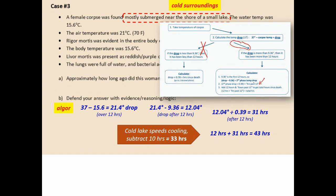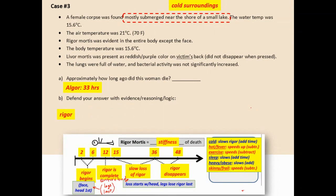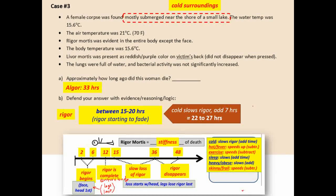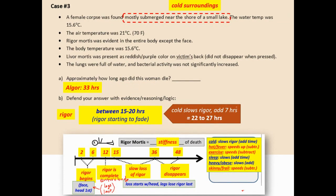We must modify the estimate for cold surroundings — cold speeds cooling, so it happens in shorter time. 43 hours minus 10 gives 33 hours. For larger estimates, subtract about 10 hours. For rigor mortis: rigor is present throughout the body except the face, meaning it has just started to fade — so it's just over 15 hours, giving a range of 15 to 20 hours.